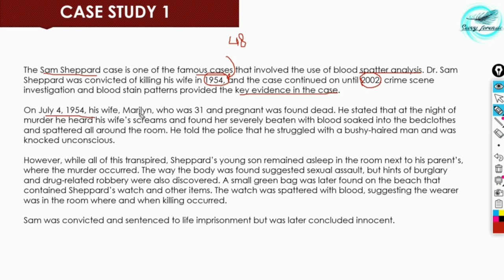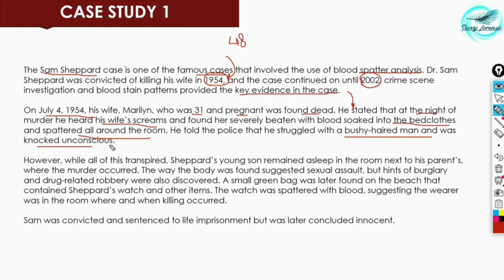On July 4, 1954, his wife Marilyn, who was 31 and pregnant, was found dead. His statement was that on the night of the murder he heard his wife screaming, found her severely beaten with blood soaked into the bed clothes and spattered all around the room. He told police he struggled with a bushy-headed man, which knocked him unconscious.